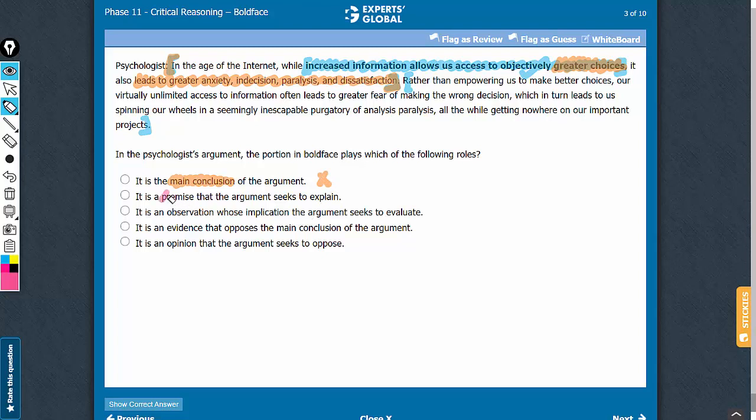Look at answer choice B now. Yes, to call it a premise is alright. Remember, premise is a statement from which another statement is inferred. So this term is alright. However, then to say that the argument seeks to explain is not correct. This is something that the argument assumes to be true. The author makes no effort in explaining that increased information allows us access to objectively greater choices. Whatever efforts the author has put in explaining is for explaining the entire conundrum that happens because of excessive information, this entire bit here, greater anxiety, indecision, etc.